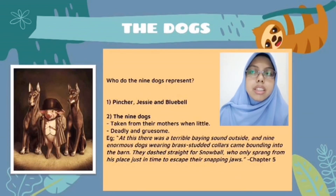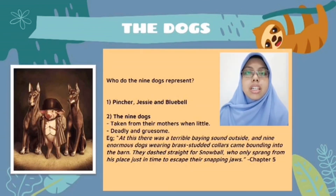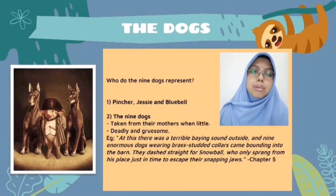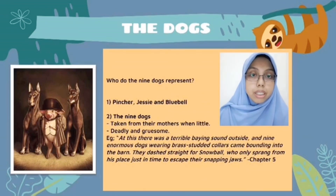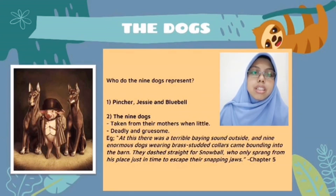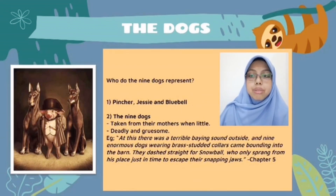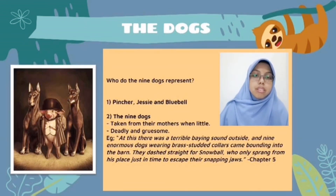These nine dogs help Napoleon implant fear amongst the people and animals around the farm. They are very deadly and gruesome but extremely obedient to Napoleon. When Napoleon told them to chase Snowball away from the farm, they immediately chased him. This is a scene from Chapter 5: there was a terrible baying sound outside, and nine enormous dogs wearing brass-studded collars came bounding into the barn. They dashed straight for Snowball, who only sprang from his place just in time to escape their snapping jaws.